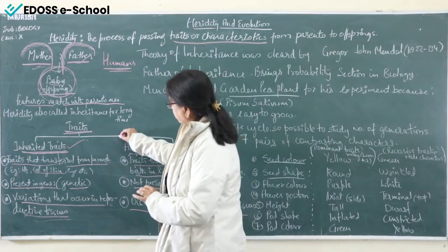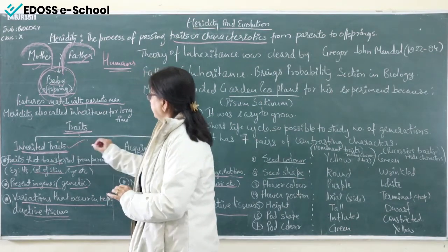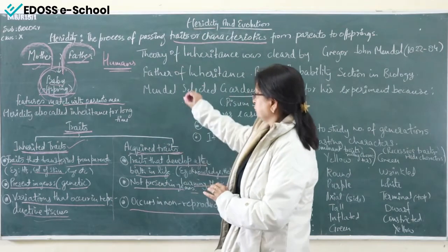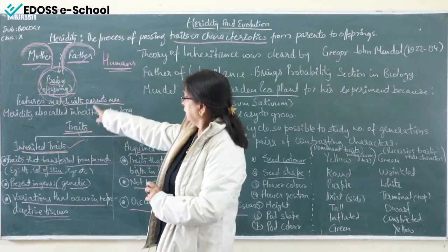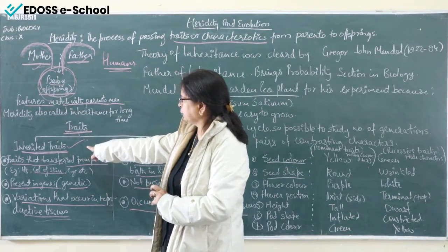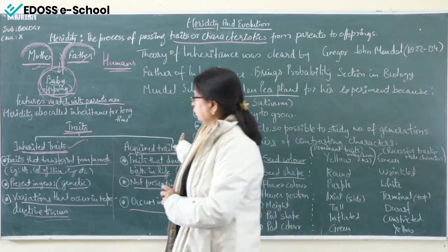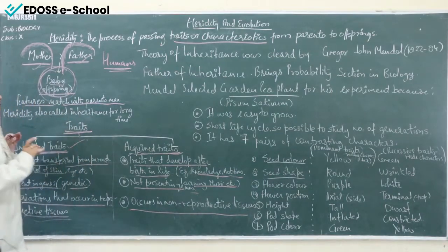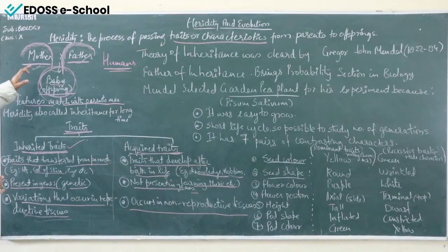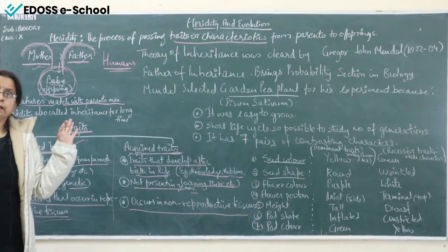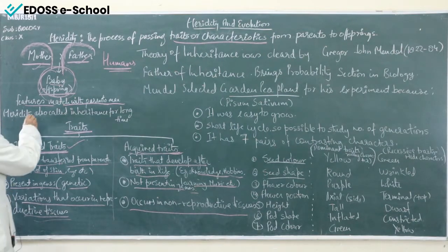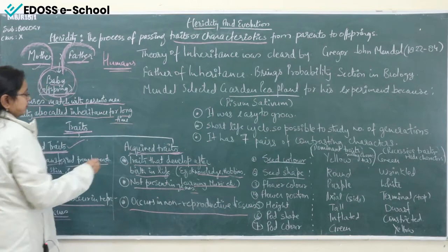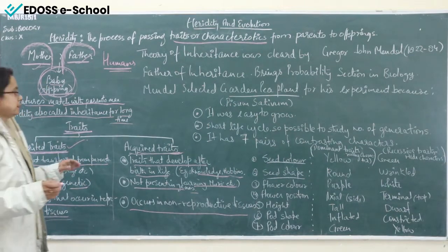These are the important points of differentiation between inherited traits and acquired traits. We have gone through heredity, understood it with the example of mother and father, and seen that traits are of two types: inherited and acquired. One more important point: the term heredity was also called inheritance for a very long time, but presently the technical term is heredity.